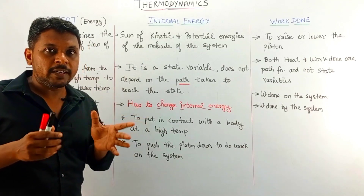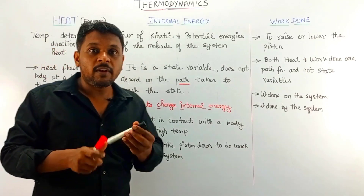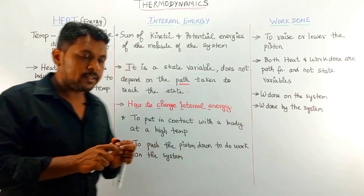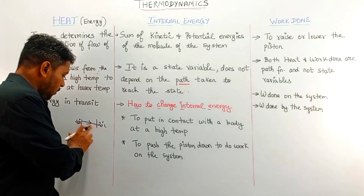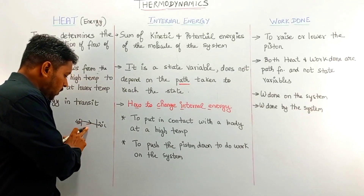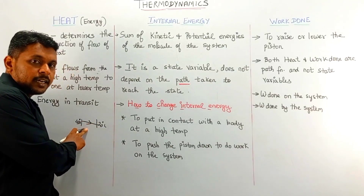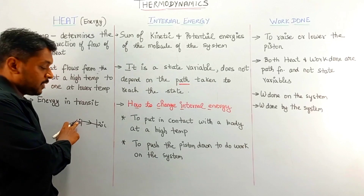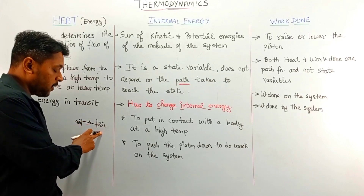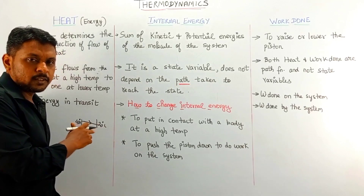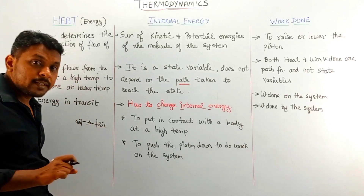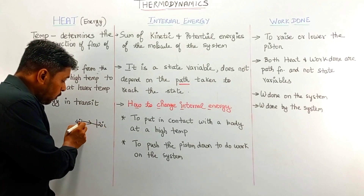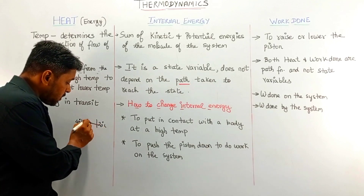This temperature difference determines where the heat flows. For example, here we can see that this is the temperature at 40 degrees Celsius and here the temperature at 20 degrees Celsius. So, this temperature difference determines that heat flows in this direction.